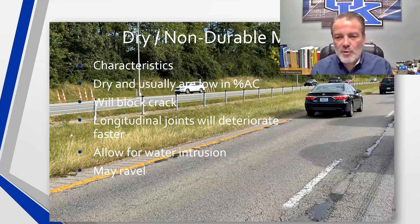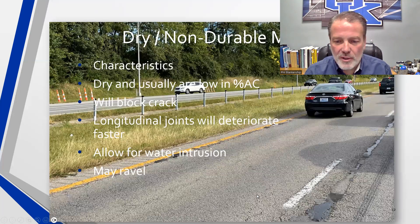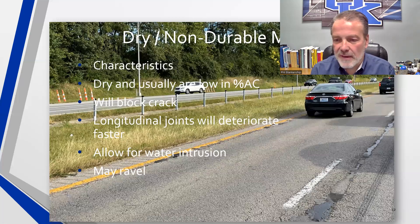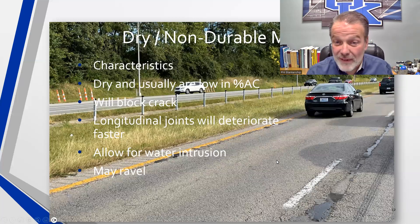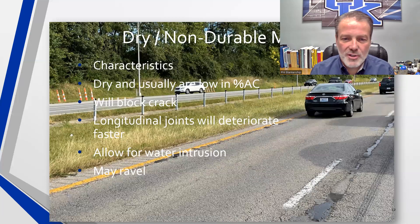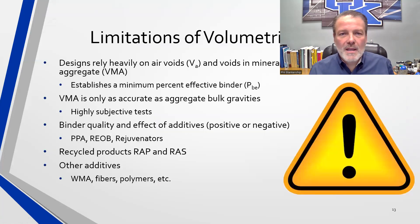Here's a picture of a pavement I photographed when traffic slowed nearly to a stop. It shows a lot — block cracking that starts as longitudinal cracks and begins to connect, the longitudinal joint falling apart about 18 inches on each side where you're compacting an unconfined edge, and raveling. The characteristics of a non-durable mix: usually dry and low in asphalt content, block cracking, deteriorating longitudinal joints that allow water intrusion, and raveling.